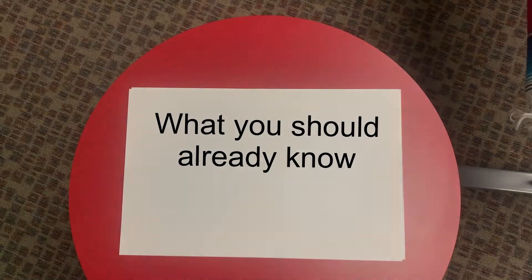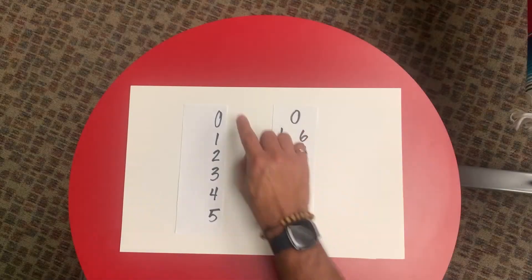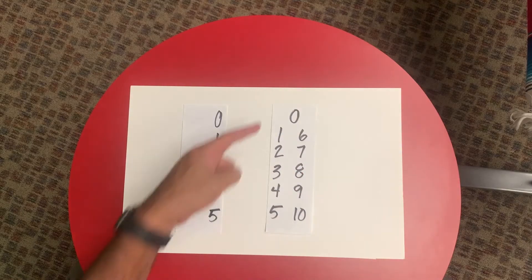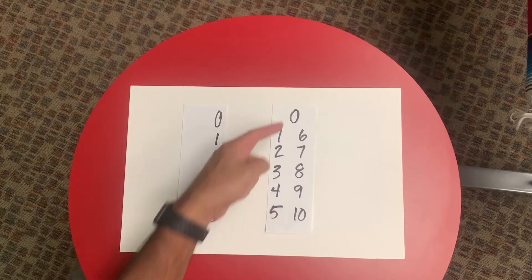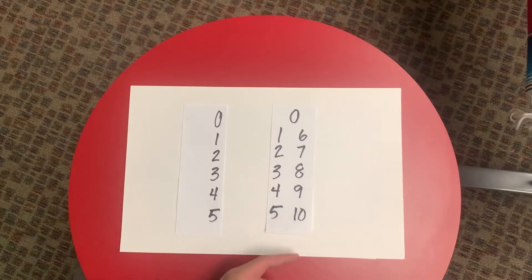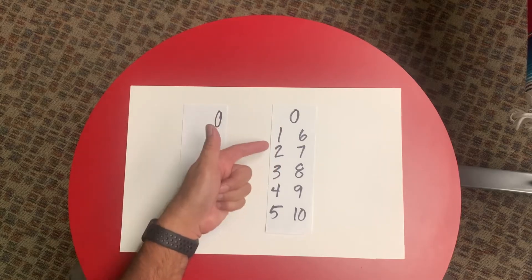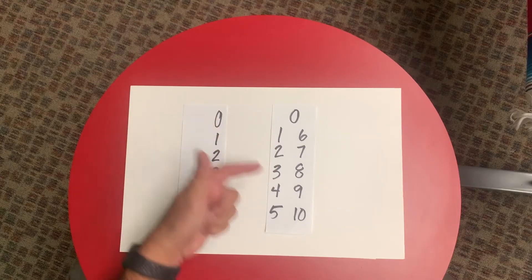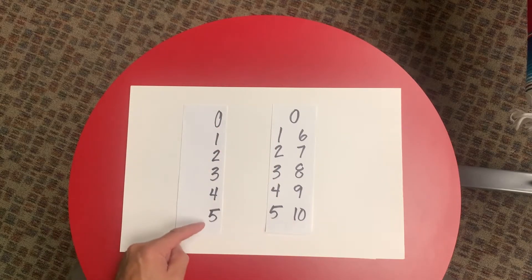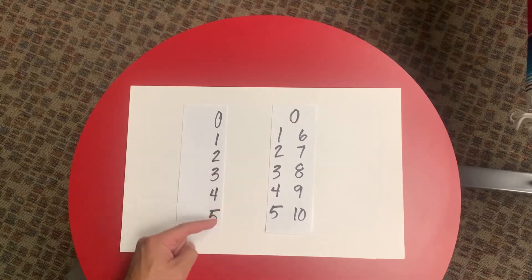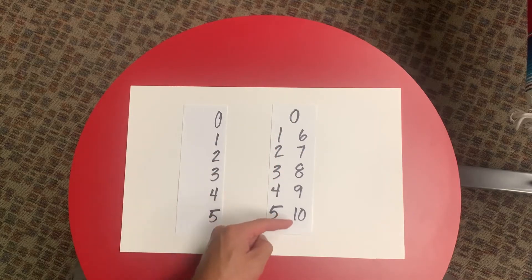We should have a good understanding of multiplying these numbers to these 10 digits from 0 to 10. So 0 times 0, 0 times 1, all the way up to 0 times 10, and taking it from 5 times 0, 5 times 1, 5 times 2, all the way up to 5 times 10.